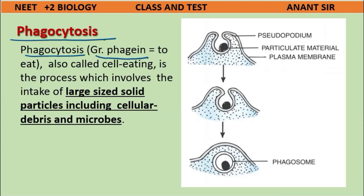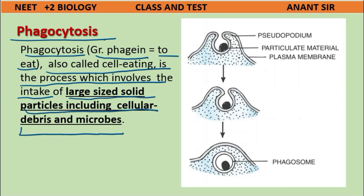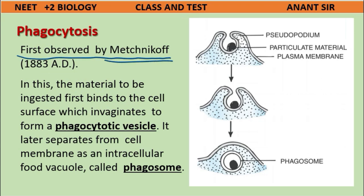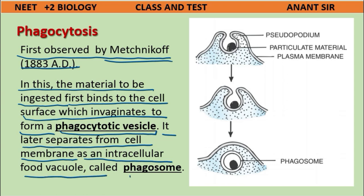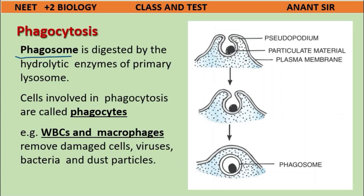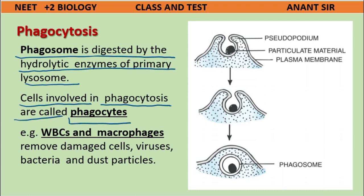Phagocytosis (Greek: phagein = to eat), also called 'cell eating,' involves the intake of large-sized solid particles including cellular debris and microbes. First observed by Metchnikov in 1883. The material to be ingested binds to the cell surface, which invaginates to form phagocytotic vesicles, later separating as intracellular food vacuoles called phagosomes. Phagosomes are digested by hydrolytic enzymes of primary lysosomes. Cells involved in phagocytosis are called phagocytes — e.g., WBCs and macrophages, which remove damaged cells, viruses, bacteria, and dust particles.